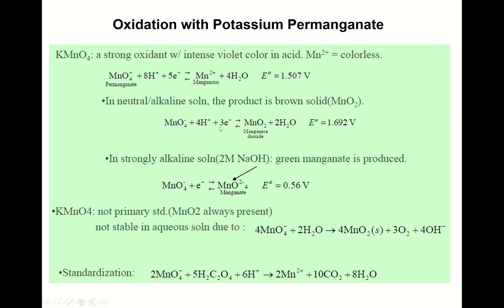Potassium permanganate is a widely used oxidizing agent. In strong acid conditions, E⁰ = 1.51 V, giving very high oxidizing power. In neutral or alkaline solution, the product is not Mn²⁺ but brown solid MnO₂. Titrations with permanganate are typically done under strongly acidic conditions.